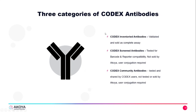I mentioned that I would elaborate on the different types of Codex antibodies. The validated antibodies are sold as a complete assay. The Codex screen antibodies are tested for barcode and reporter compatibility, but are not sold by AKOYA and user conjugation is required. And the Codex community antibodies are tested and shared by Codex users, but not tested or sold by AKOYA, and user conjugation is required.